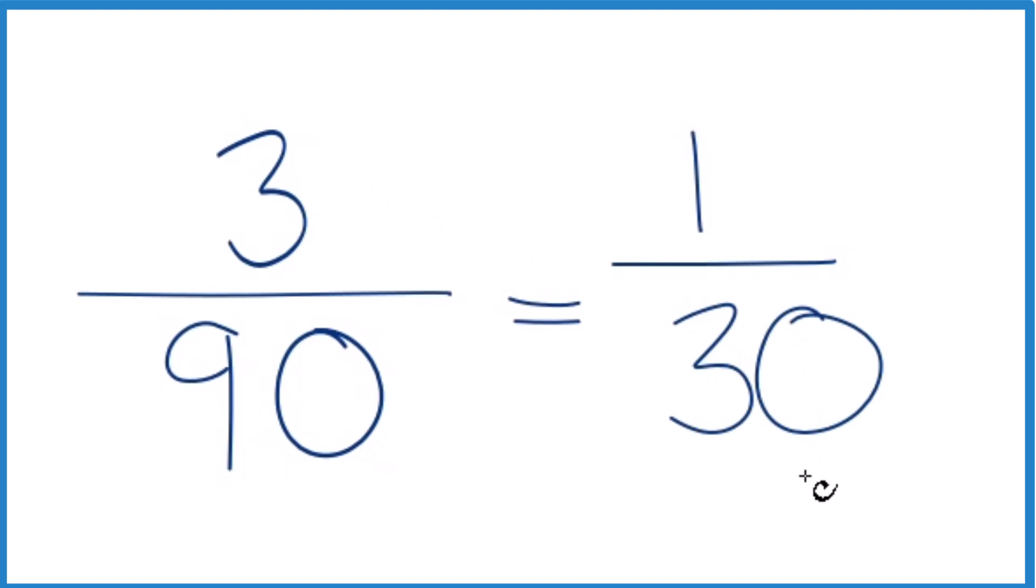30 times 3 gives us 90. So when we simplify the fraction 3/90, we end up with 1/30.